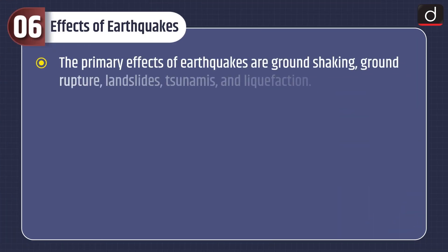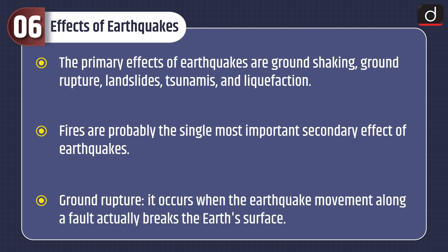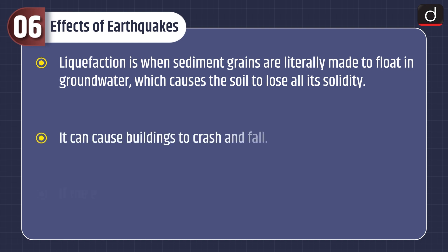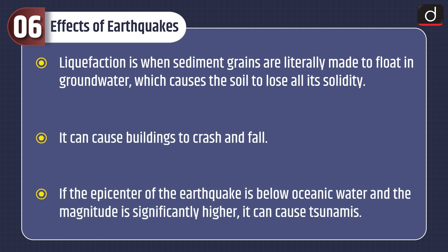Now let's look at the effects of earthquakes. The primary effects are ground shaking, ground rupture, landslides, tsunamis, and liquefaction. Fires are probably the single most important secondary effect. Ground rupture occurs when earthquake movement along a fault actually breaks the earth's surface. Liquefaction is when sediment grains are literally made to float in groundwater, causing the soil to lose all its solidity, and can cause buildings to crash and fall. If the epicenter is below oceanic water and the magnitude is significantly high, it can cause tsunamis.